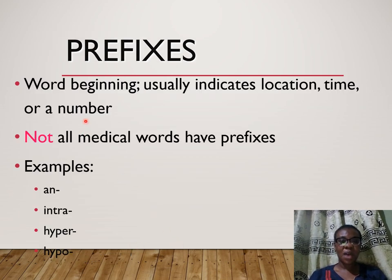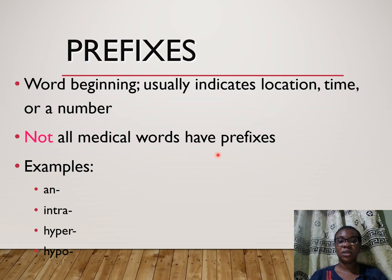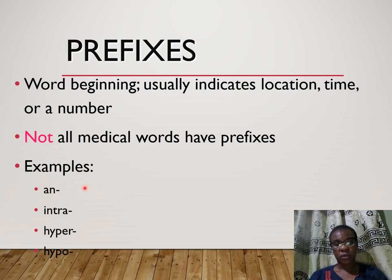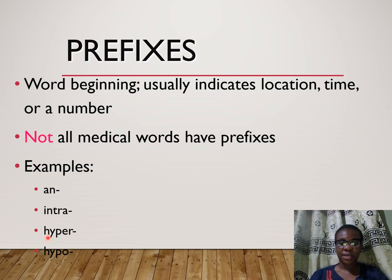Prefixes are word beginnings, and they usually indicate the location, the time, or the number that has to do with the body part in question. It's important to know that not all medical words have prefixes. Some examples: 'an-' is a prefix — 'emia' is blood — so 'anemia' means no blood, which for us means reduced blood level. 'Intra-' means within, so 'intra-abdominal' means within the abdominal cavity. 'Hyper-' means increased, exaggerated, higher than normal — so 'hypertension' means increased tension.